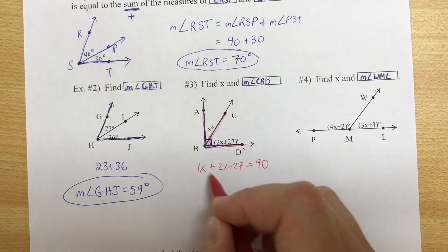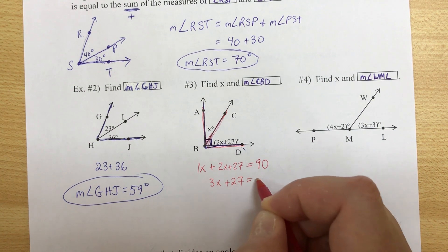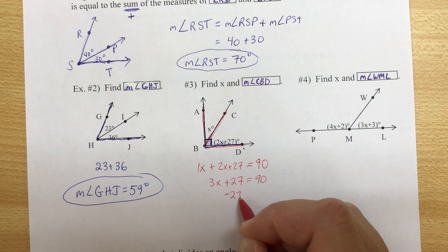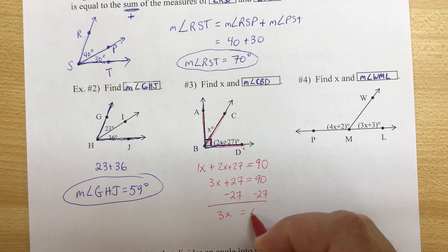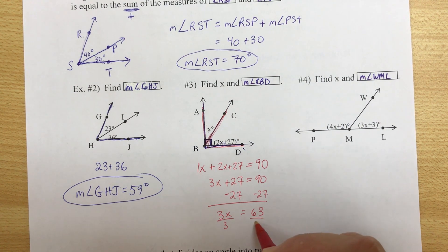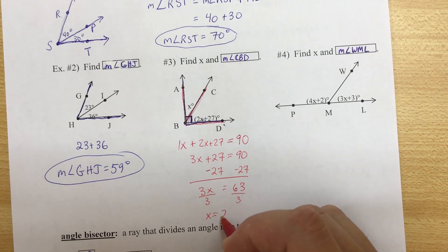Now we're going to solve it. We can combine like terms. 3x plus 27 equals 90. We're going to move the constant by subtracting it. So 3x is equal to 63. 3 times x. We're going to move the coefficient by dividing. So x is equal to 21.